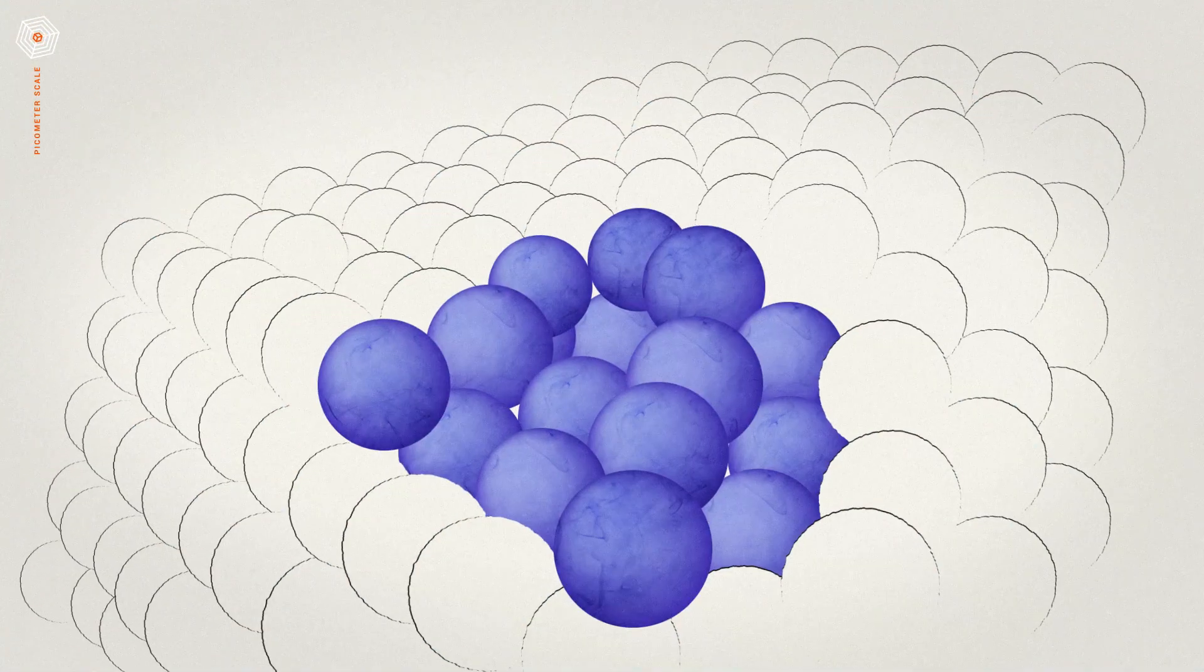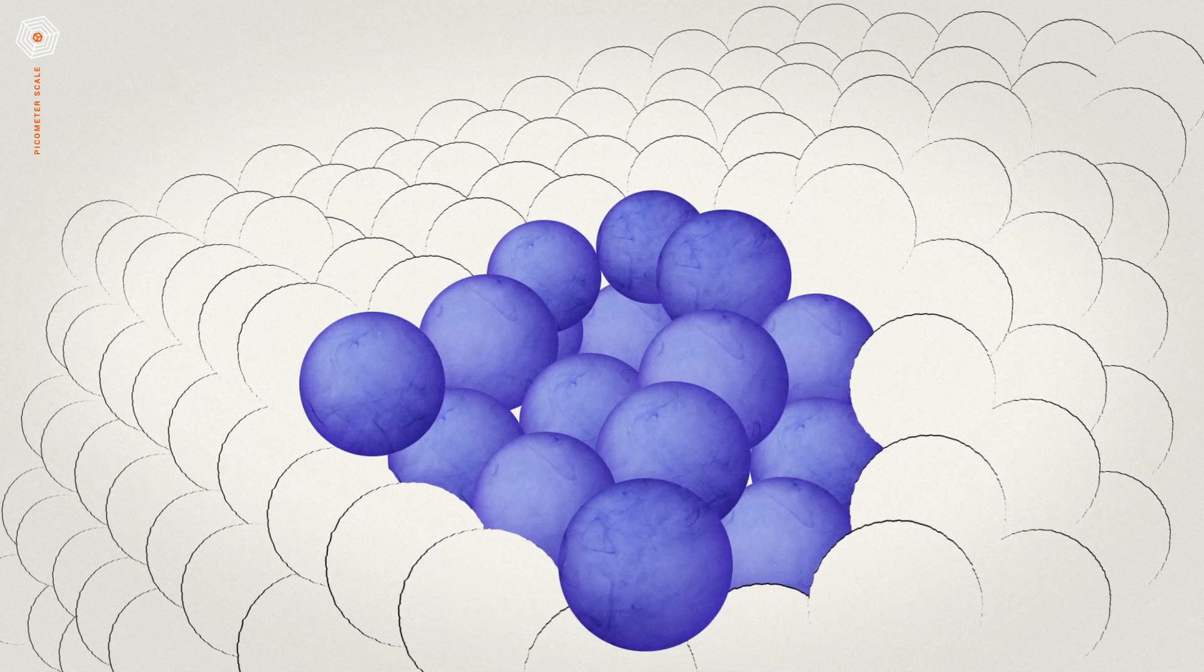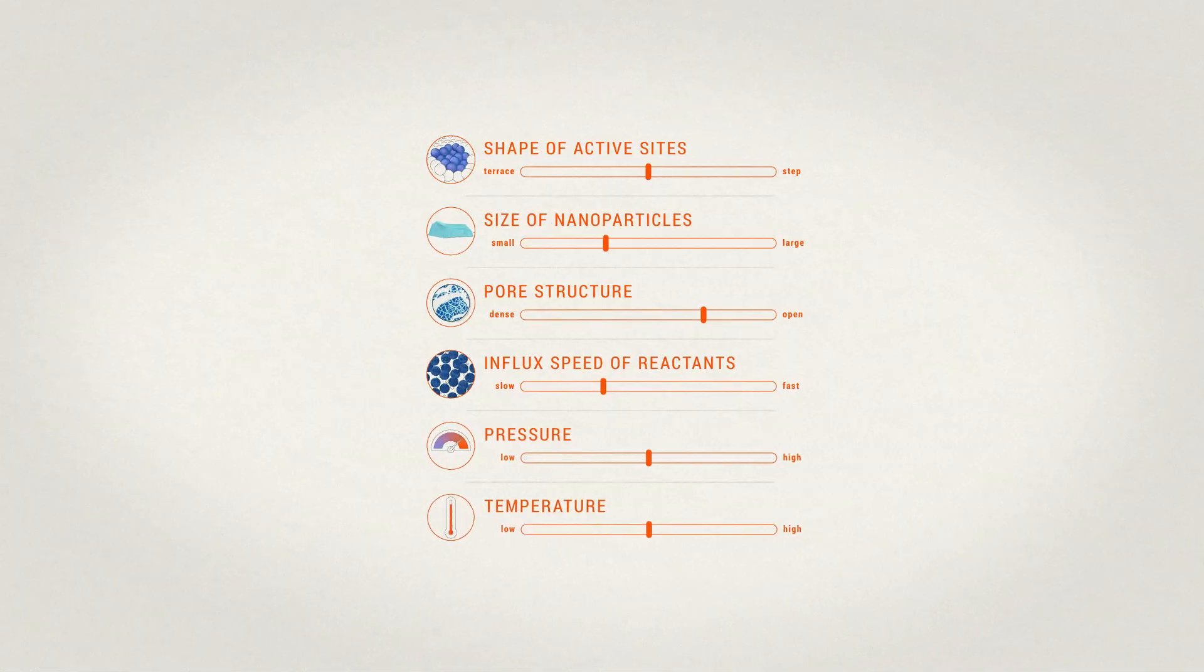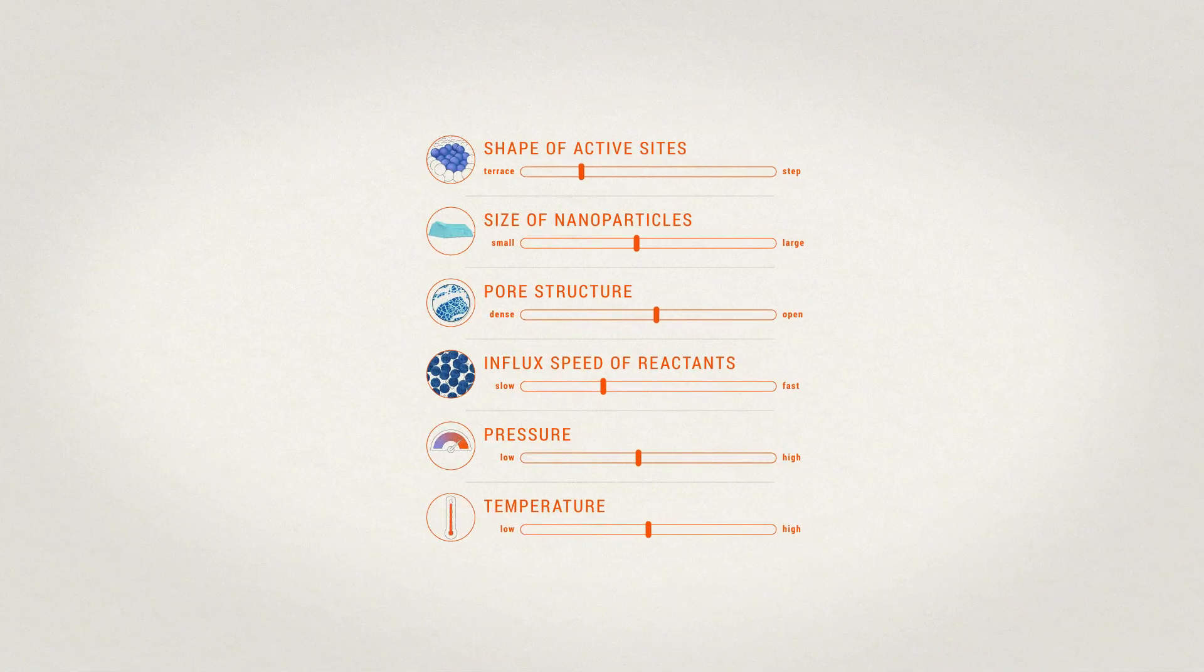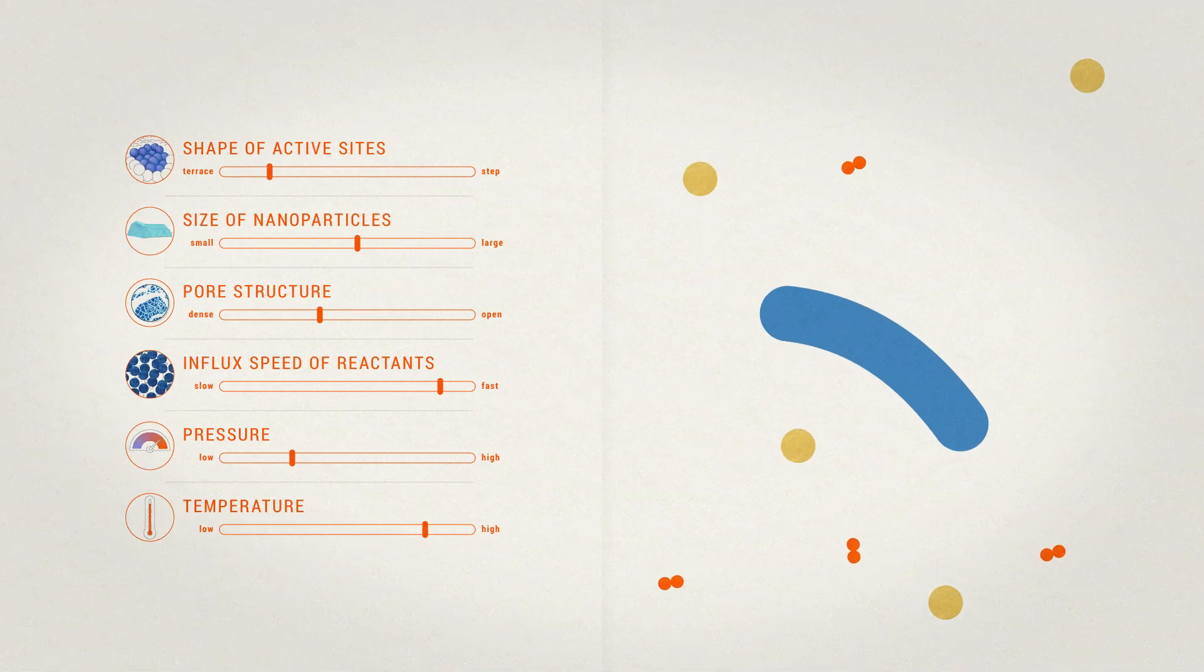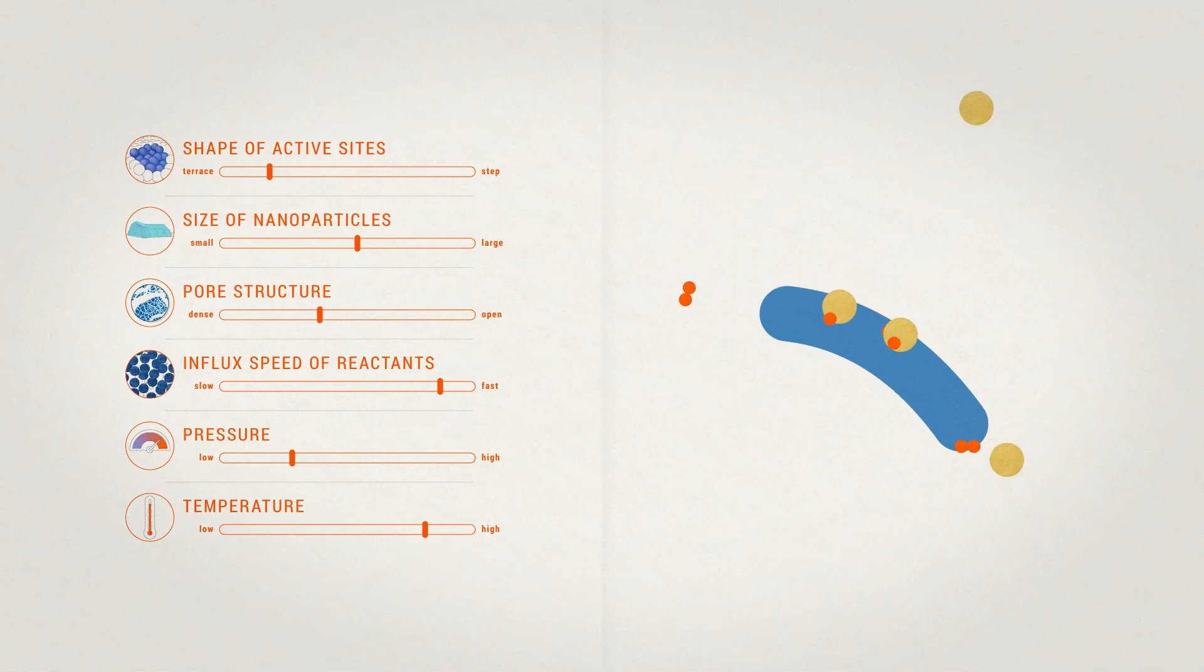It's on specific surface areas of these nanoparticles, the active sites, where the catalytic reactions occur. In this complex system, everything has to be just right for the desired catalytic reaction to happen in the most efficient way.